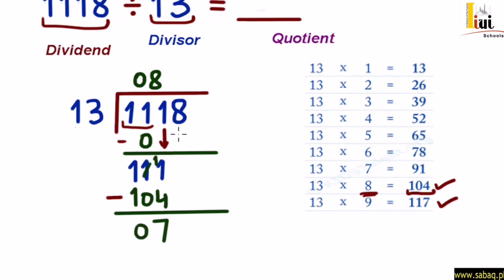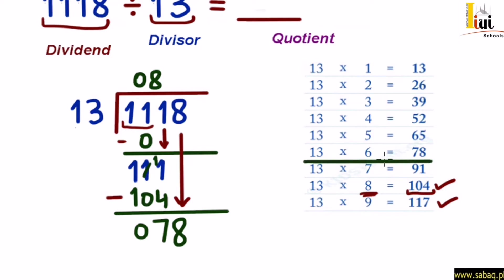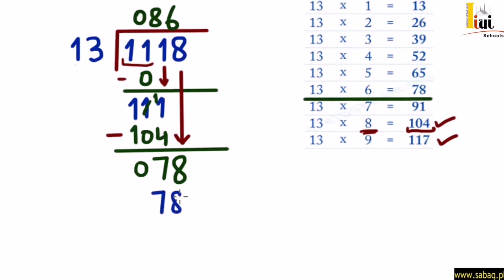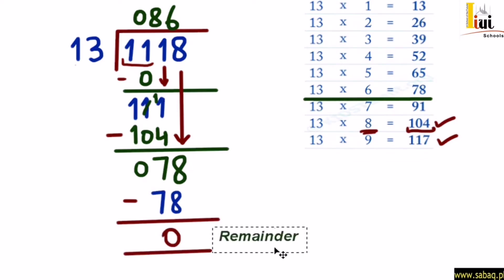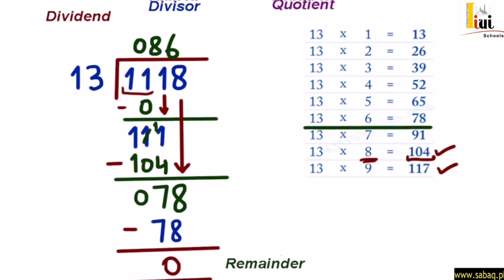अब अगले step में 8 को नीचे लेकर आना है। तो यह बन जाएगा 78। अब 78 को हमने divide करना है 13 से। तो 78 क्या 13 के टेबल में आता है? यहाँ पर आता है: 13×6 = 78। तो यहाँ पर हम लिखेंगे 13×6 = 78। और 78 में से minus करना है 78 को, जो 0 के बराबर आ जाएगा। और 0 remainder है।